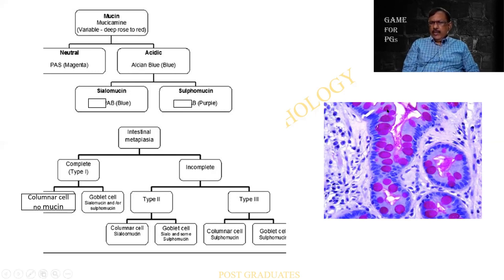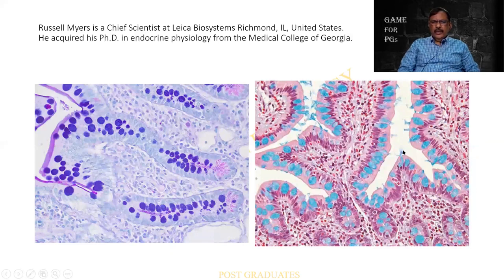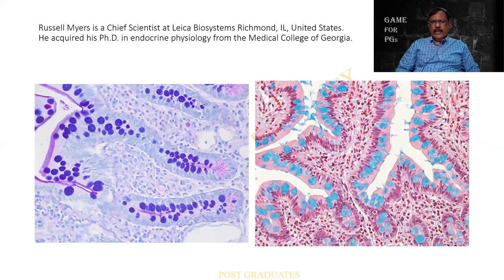Now look at this — the color is not quite pink nor blue, so we call it magenta. This is an excellent control for a PAS stain. Look at this Alcian blue — it is taking up more of a violetish color here and a pure blue, almost sea-blue, color over here. So this is one of the stains for mucin.